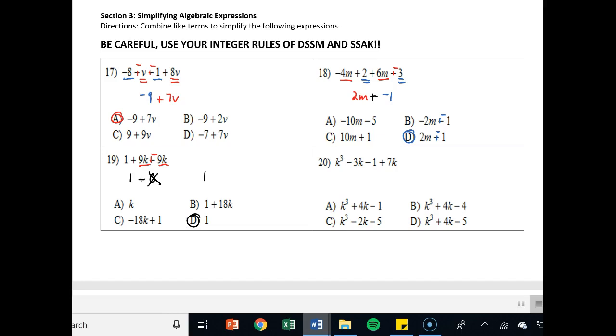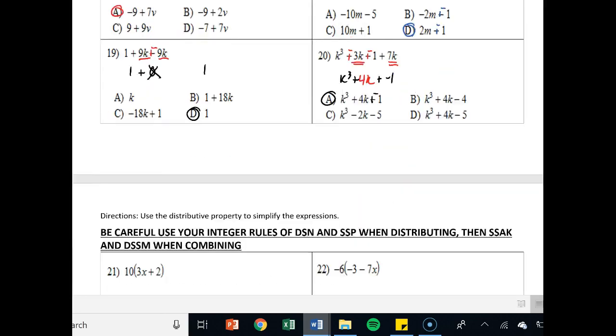So k to the third is not a like term with 3k. So I figure out these are like terms. Negative 3k and 7k. That's 4k. Negative 1 is not a like term with anything. So I bring it on down. k to the third is not a like term with anything. So I bring it on down. And there's my answer. And A is my answer because I do plus negative. Let's go ahead and move on down to the next page.